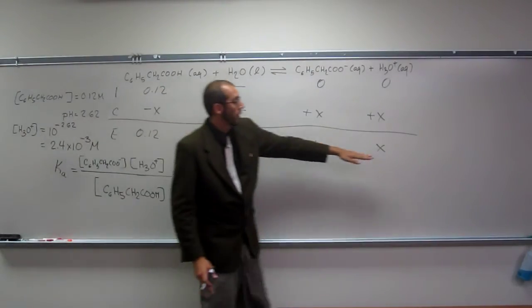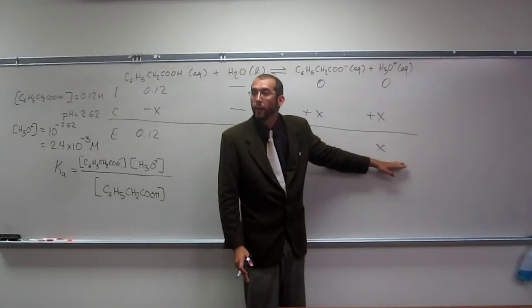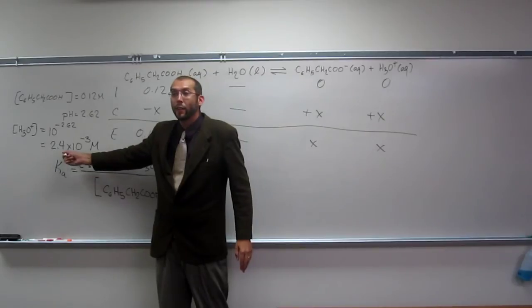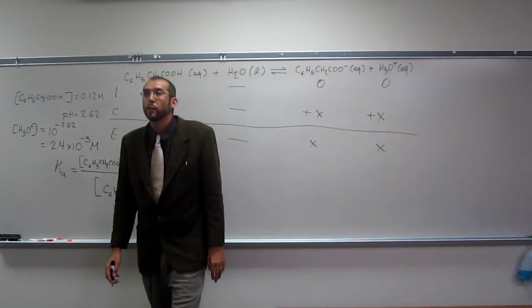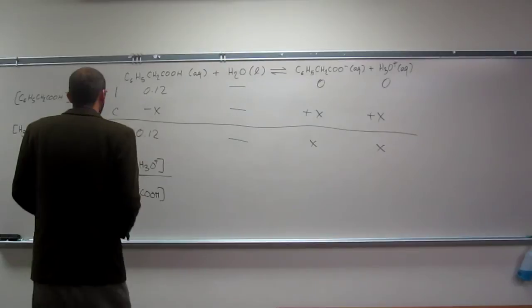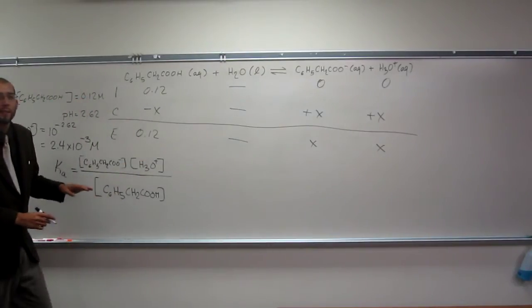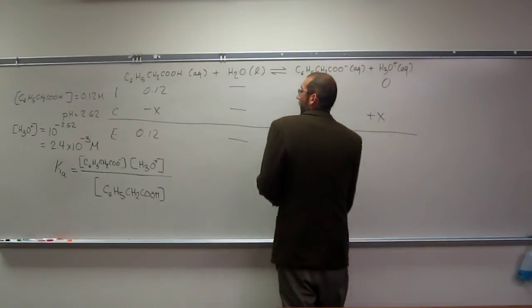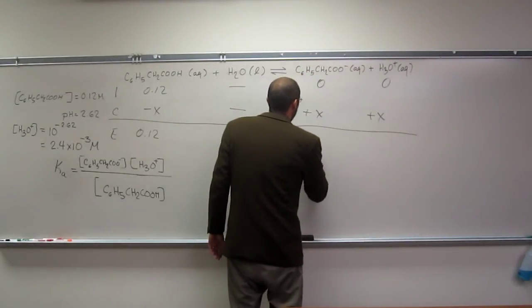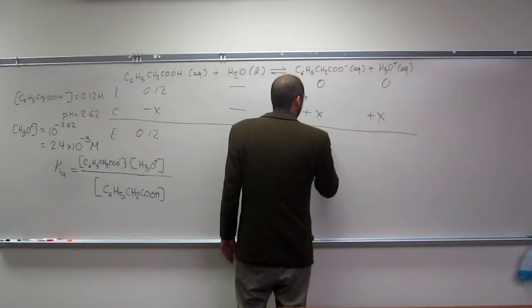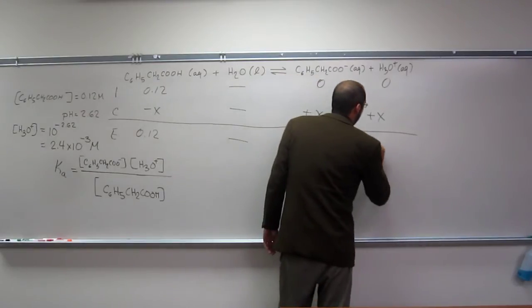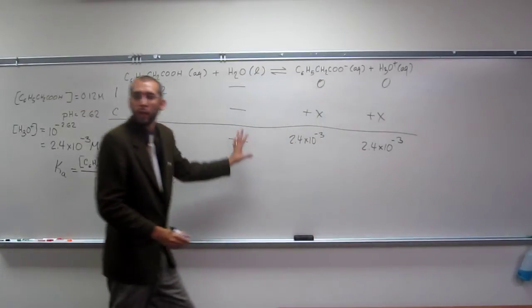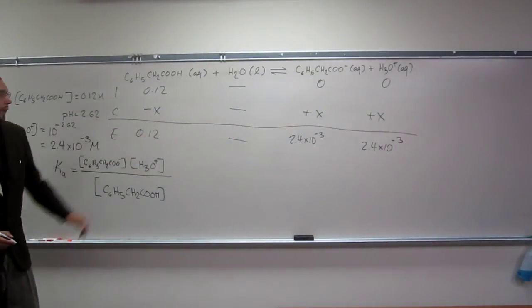So, notice, that's X. That means that this also is that concentration there. Does that make sense to everybody? So, let's write those two things down really quick. 2.4 times 10 to the negative 3rd, 2.4 times 10 to the negative 3rd.